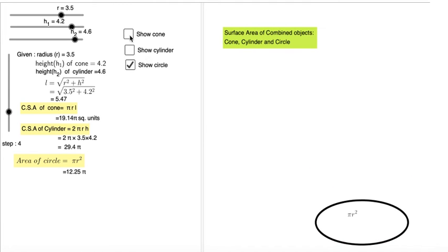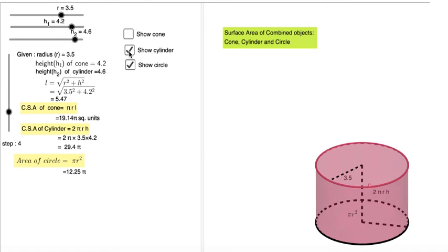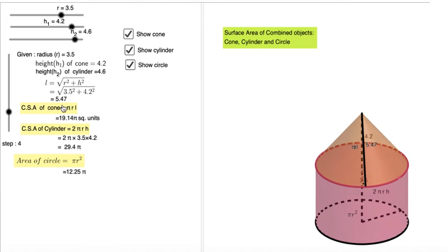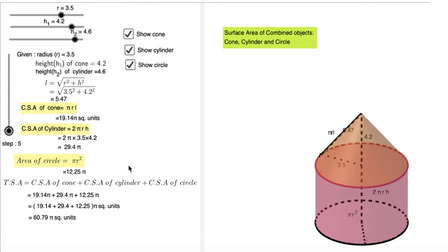As you know, area of the circle is pi r squared. So now show the cylinder, show the cone. We found area of the individual objects. Now look at the last step. Add all three to get surface area of this combined object.